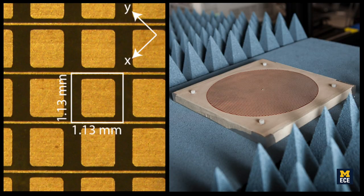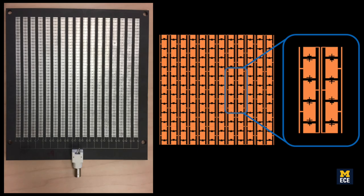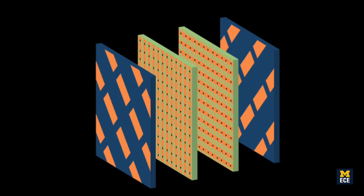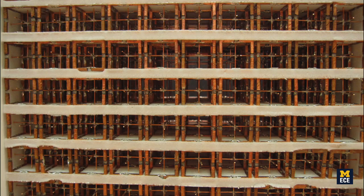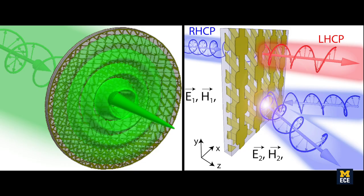Metamaterials are sub-wavelength structured, artificially engineered materials. Generally, metamaterials have had fixed properties — their properties are dictated by their geometry. So once you fabricate the metamaterial, its properties are fixed.